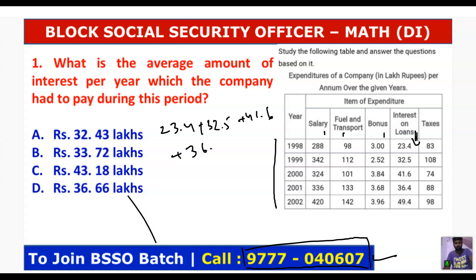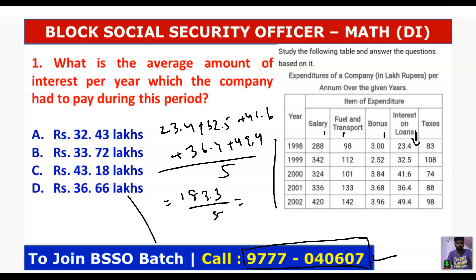36.4 plus 49.4 divided by 5 — so 183.3 divided by 5 — equals 36.66. Option D. Very good.